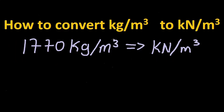In this video I'm going to show you how to convert from kilogram per cubic meters to kilonewton per cubic meters. As you can see, we have an example here on the screen: 1770 kilogram per cubic meters, and we want to convert it to kilonewton per cubic meters.